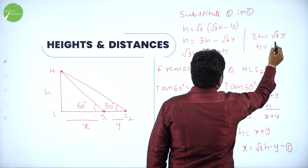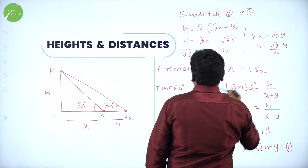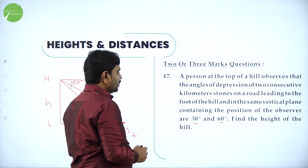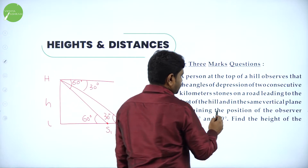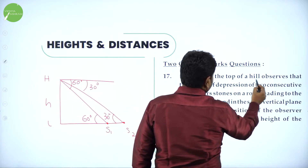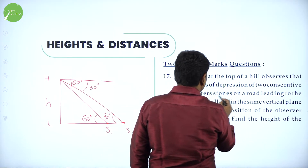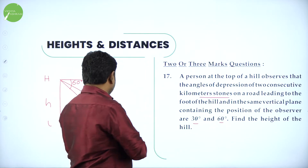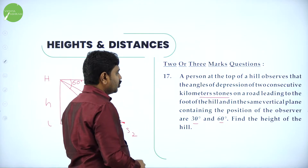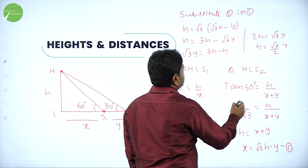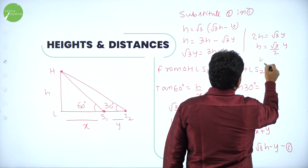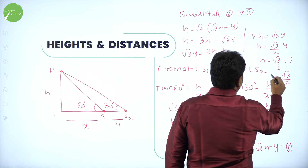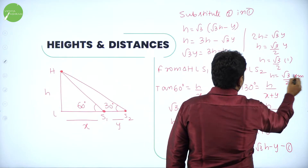Simplifying: H equals 3H minus root 3 y. Rearranging, root 3 y equals 3H minus H equals 2H, so H equals root 3 by 2 times y, where y is the distance between the milestones. Since they are consecutive kilometer stones, y equals 1 kilometer, so H equals root 3 by 2 into 1, giving root 3 by 2 kilometers.